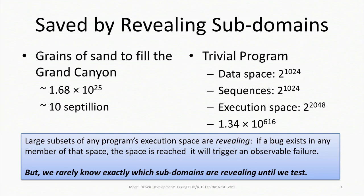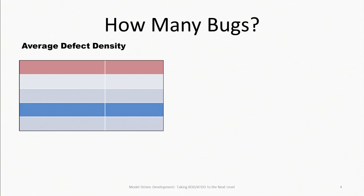There's this idea that theoreticians call revealing subdomains. It turns out there's a certain amount of regularity in software — there are large subsets of this astronomically huge space that are called revealing. That means if a bug exists in a member of that space, reaching it is sufficient to trigger an observable instance of the failure. There's a certain amount of regularity and structure in software that saves us from this huge problem — but the problem is still very large nonetheless. The interesting thing about software testing is: if we knew where the bugs were to begin with, we wouldn't have to test. But we don't. We have this huge number of places to look, and all we have to go on are guesses. The whole strategy of testing is trying to find guesses that are good. That's all the testing theory.